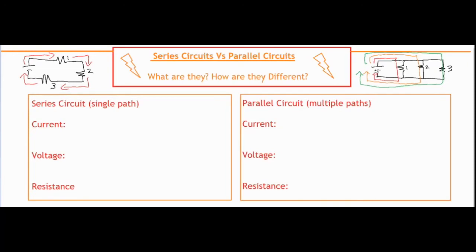Now let's take a look at the three main components of each of the circuits, which is the current, voltage, and resistance. There are some very distinct differences between these rules, so let's take a look at the current first.